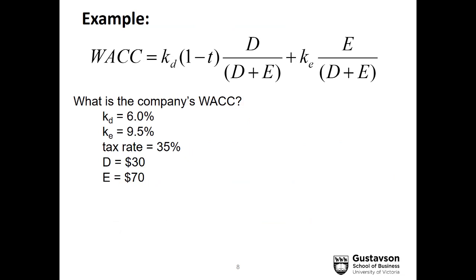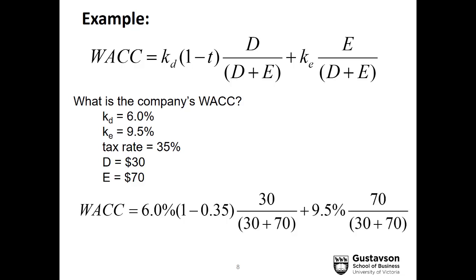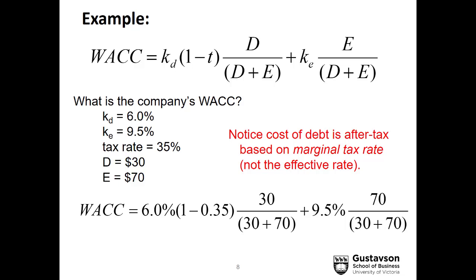Let's work through an example. Here a company has only debt and equity. The cost of debt is 6%, which is the yield to maturity on its long-term bonds. The expected cost of equity is 9.5%. The company pays a 35% marginal tax rate, and in terms of market values, they have $30 million of debt and $70 million of equity for a total capitalization of $100 million. Plugging these numbers into the formula, the cost of debt at 6% is reduced by one minus the tax rate, multiplied by 30/100 or 30%. The cost of equity of 9.5% is multiplied by 70/100 or 70%. Adding it up, we get a weighted average cost of capital of 7.82%.